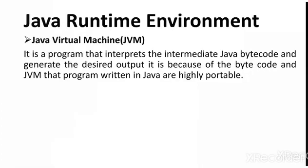Now we will discuss the Java Runtime Environment, which provides the necessary systems for executing Java programs. This includes the Java Virtual Machine, or JVM, which is a program that interprets the intermediate Java bytecode and generates the desired output. It is because of bytecode and JVM that programs written in Java are highly portable. Java does not convert source code into machine code directly; instead it converts source code into intermediate bytecode that can be executed on any machine, which is why Java is called a platform-independent language and Java programs are called portable programs.